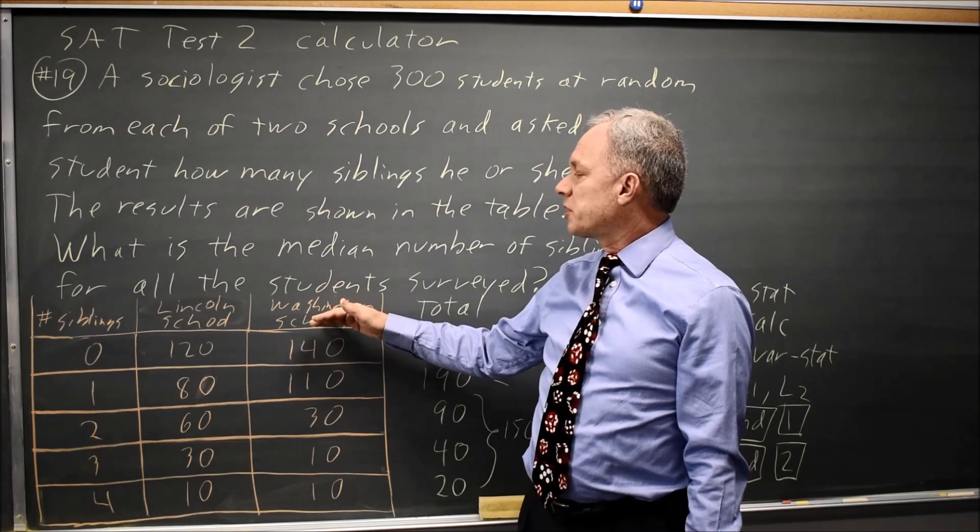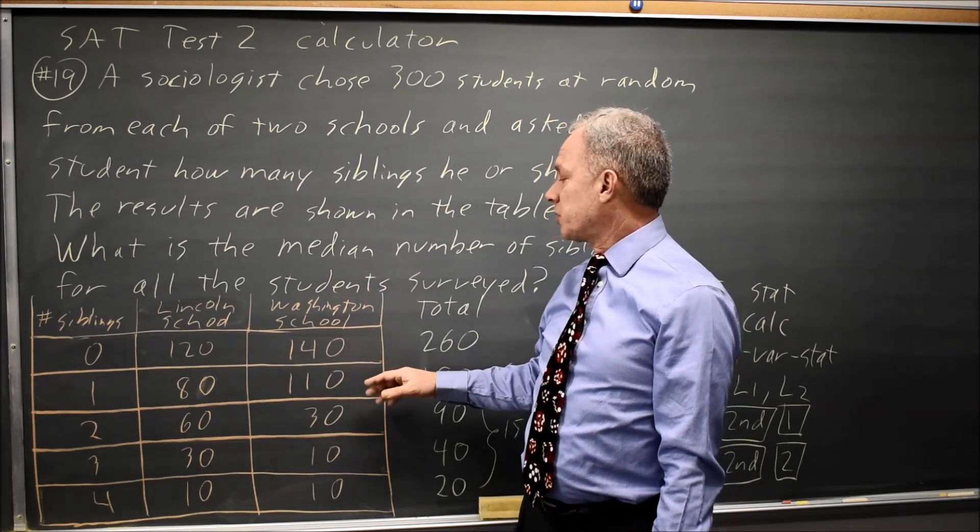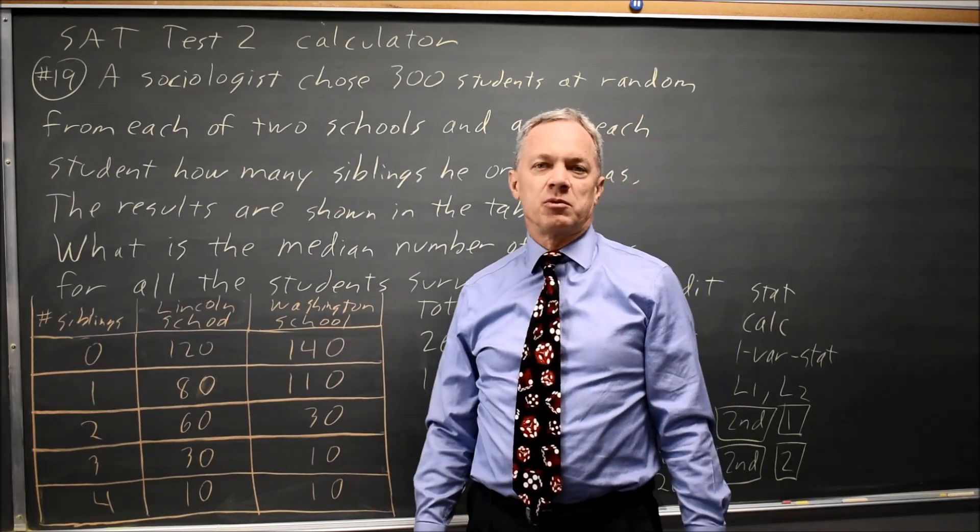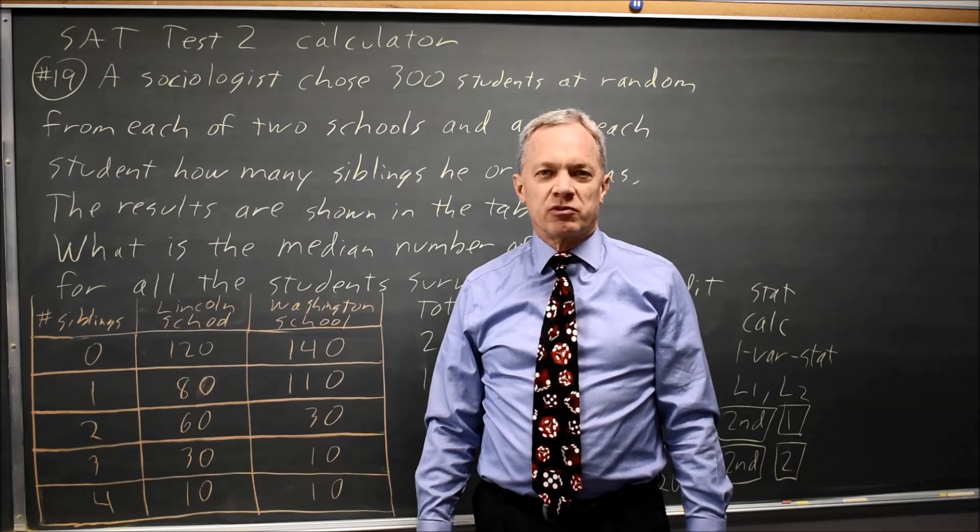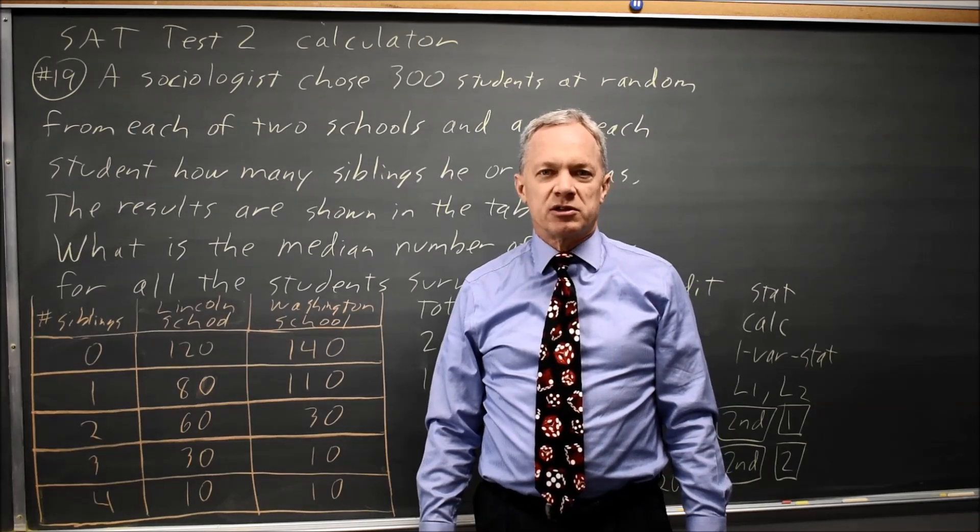And so out of 600 numbers, there will be 300 above the median, 300 below the median in this case, which puts the median at 1. Come back soon with my next math video. With math, there's always more.